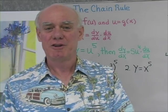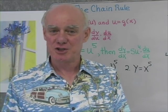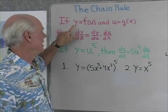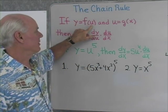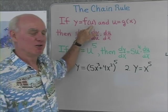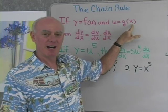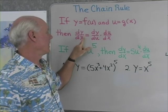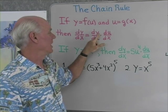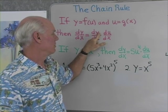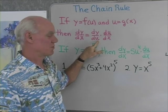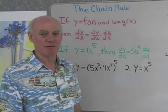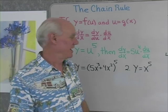Let's extend our work with derivatives to include what's called the chain rule. I've written the chain rule over here. If y is a function of u and u is a function of x, then we can differentiate y with respect to x this way: we find the derivative of y with respect to u, and then we multiply that by the derivative of u with respect to x.